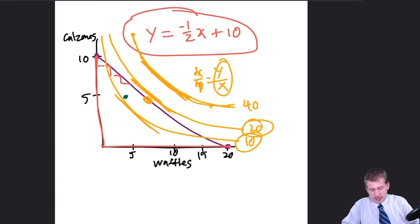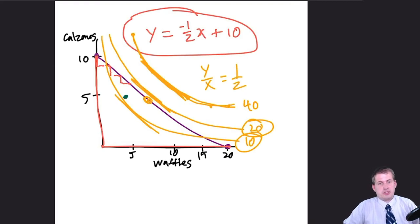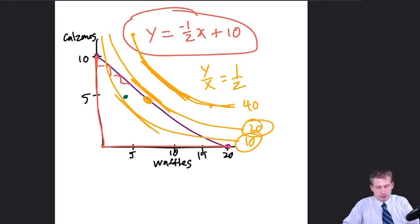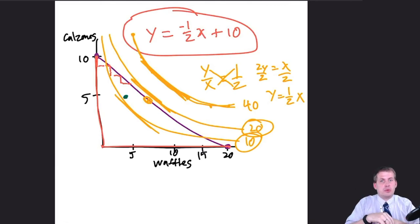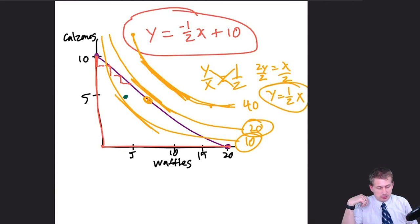So we have y over x equals one over two. Cross-multiplying gives two y equals x. Dividing both sides by two gives y equals one half x. That is the equation of the indifference curve taking into account the prices of waffles and calzones — the price-attuned marginal rate of substitution.